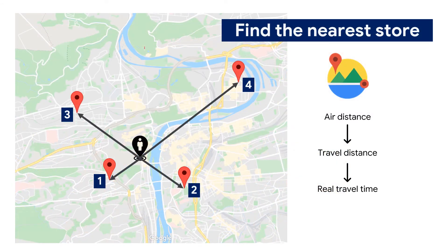Would you like to provide users with an engaging experience to find the nearest store? You can access travel distance and time for a matrix of origins and destinations with the Distance Matrix API service. The closest place by air distance is not always the closest place in driving mode. Plus, you can choose if you need real-time traffic information or if time calculated based on travel distance is sufficient.